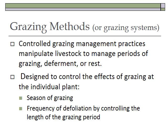Grazing methods are practices that manipulate the grazing and the periods of deferment and rest — those are the three things we manage. The methods are designed on the idea that grazing has an effect at the individual plant level. We know that plants respond to grazing differently in different seasons, so the season component of grazing methods is based on individual plant response. We also know that frequency of defoliation is important, so we control the length of grazing periods to affect how frequently a plant is defoliated.